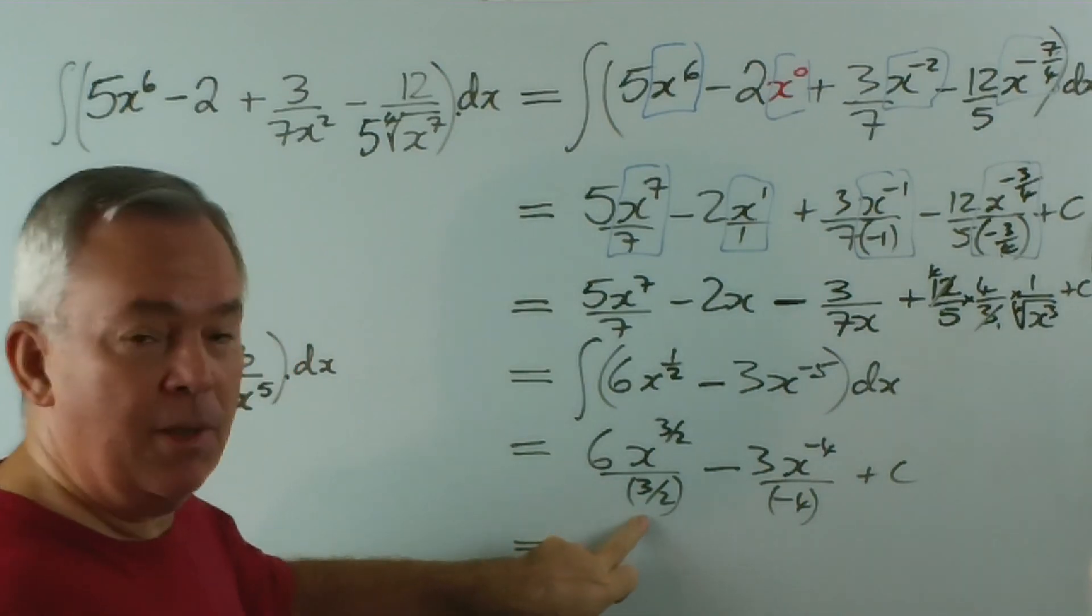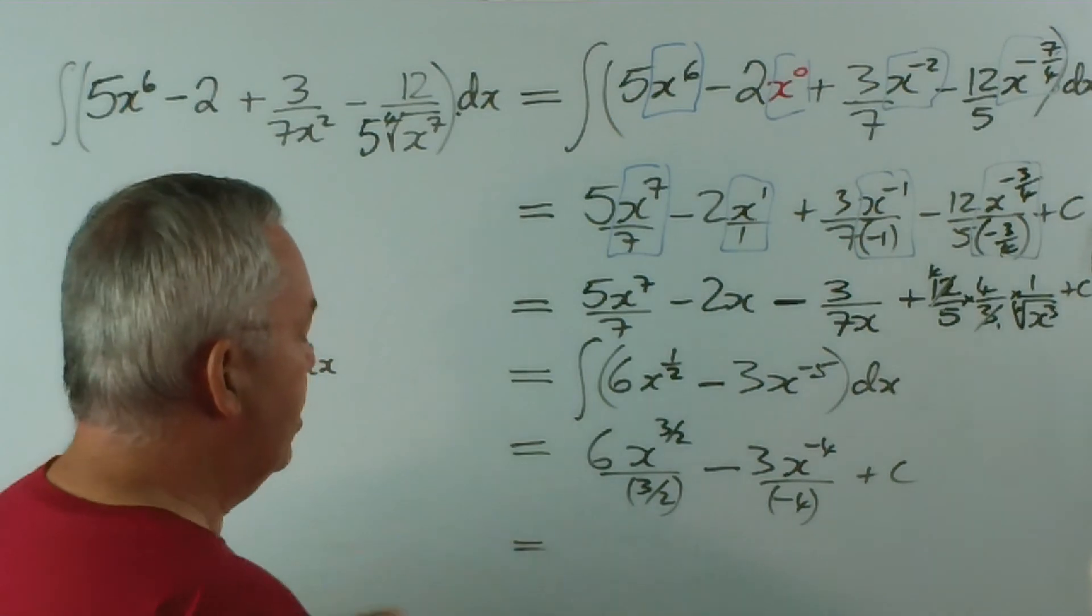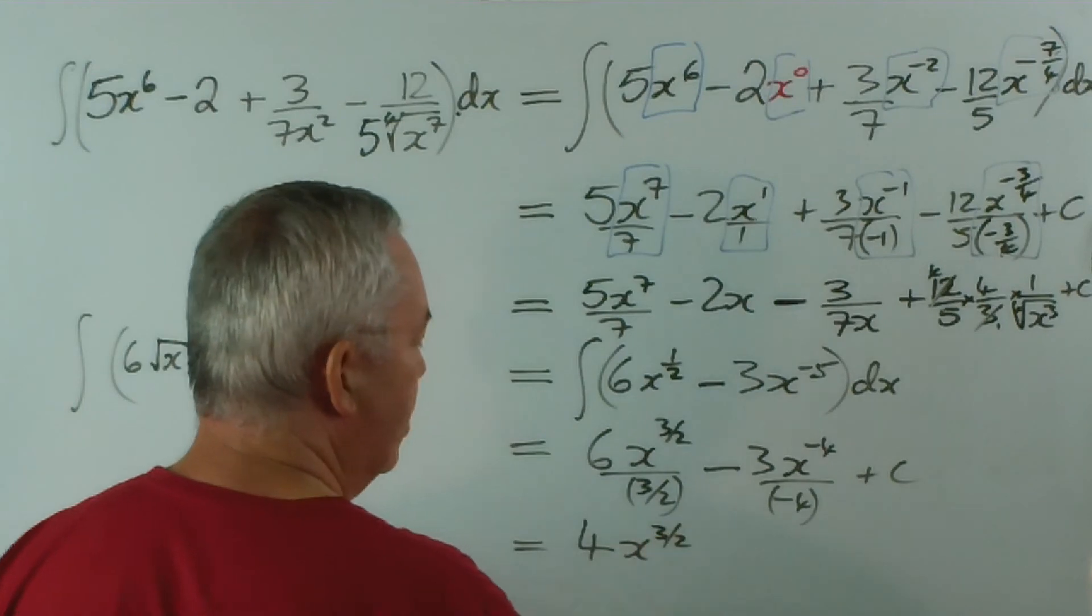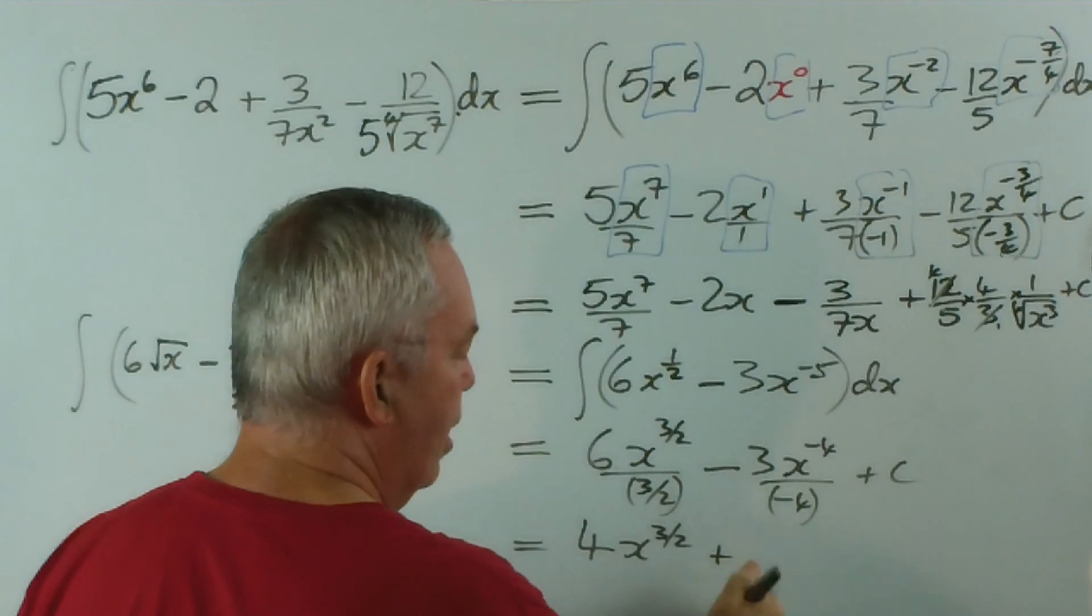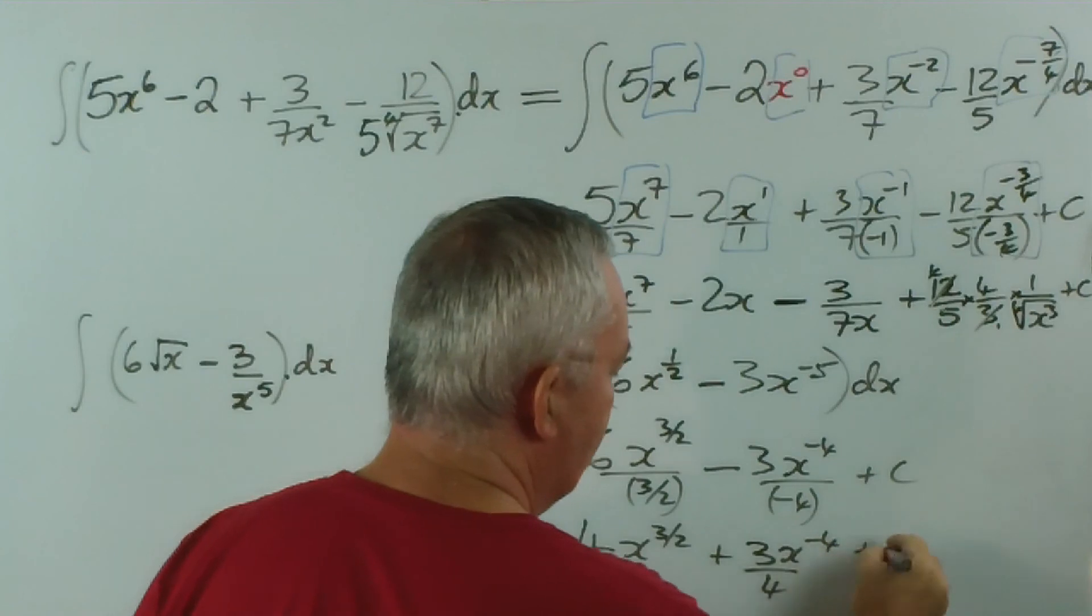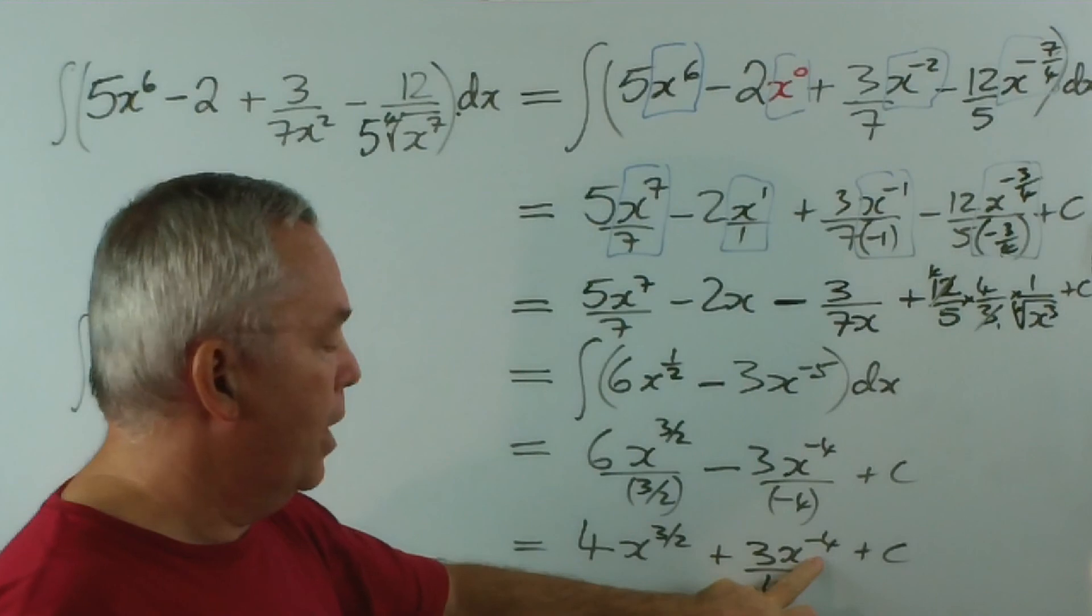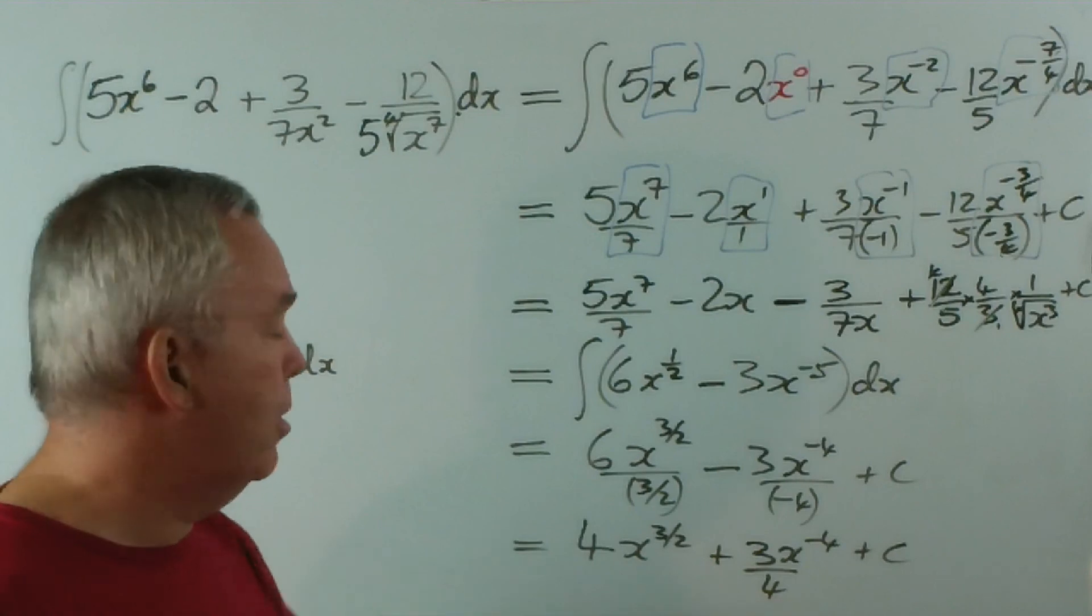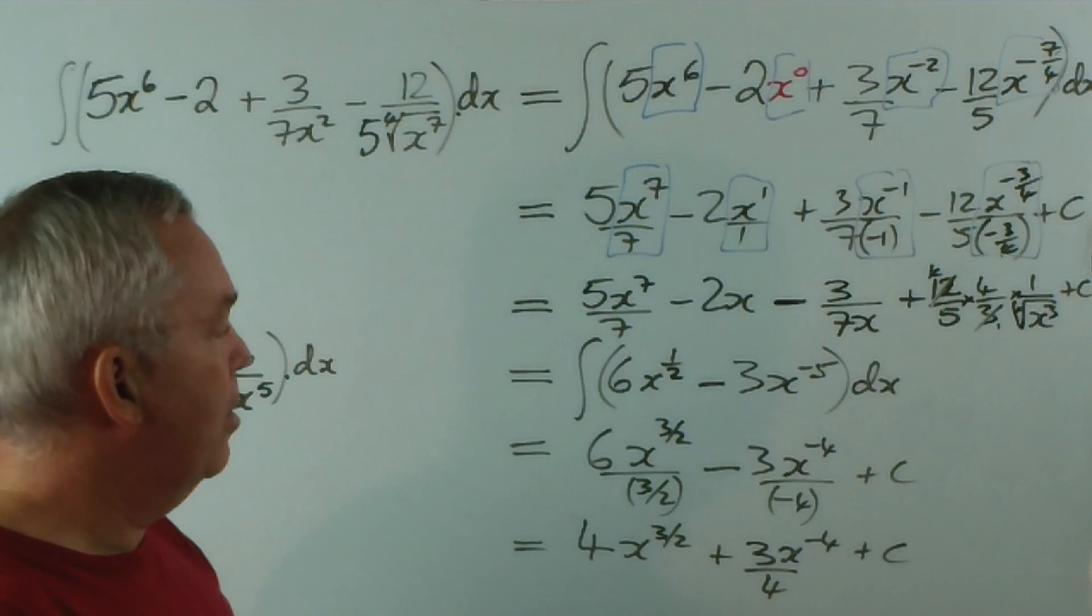Now, if we're dividing by three on two, then we're multiplying by two thirds, and two thirds of six is four, x to the three halves. A negative divided by a negative is a positive, that'll just be three over four, x to the negative four plus c. And, of course, you could write that with a radical or a third, and you could write that x to the power negative four as x to the power four in the denominator. I don't have room to show that, but we have, in fact, performed the integral, the integration.